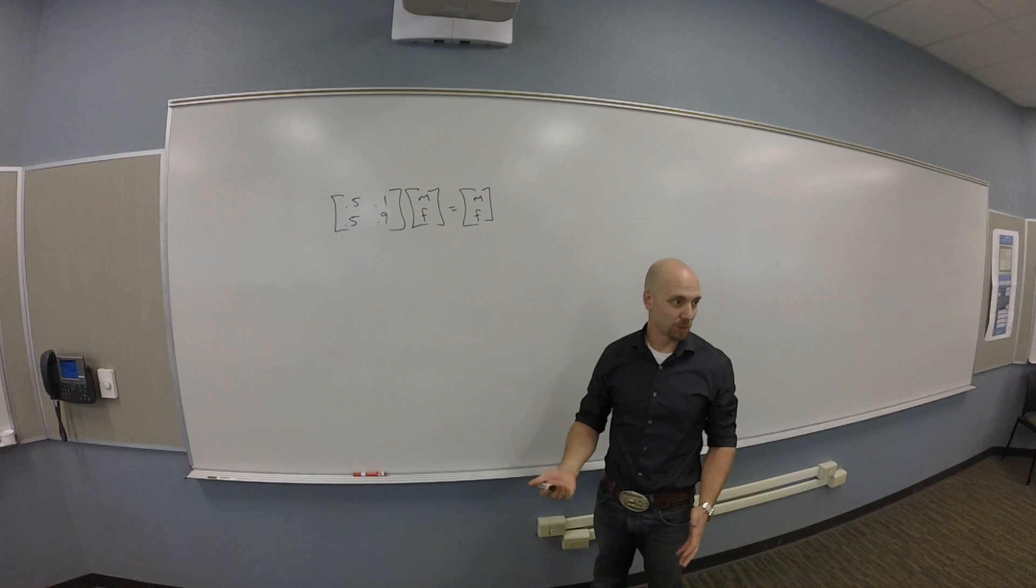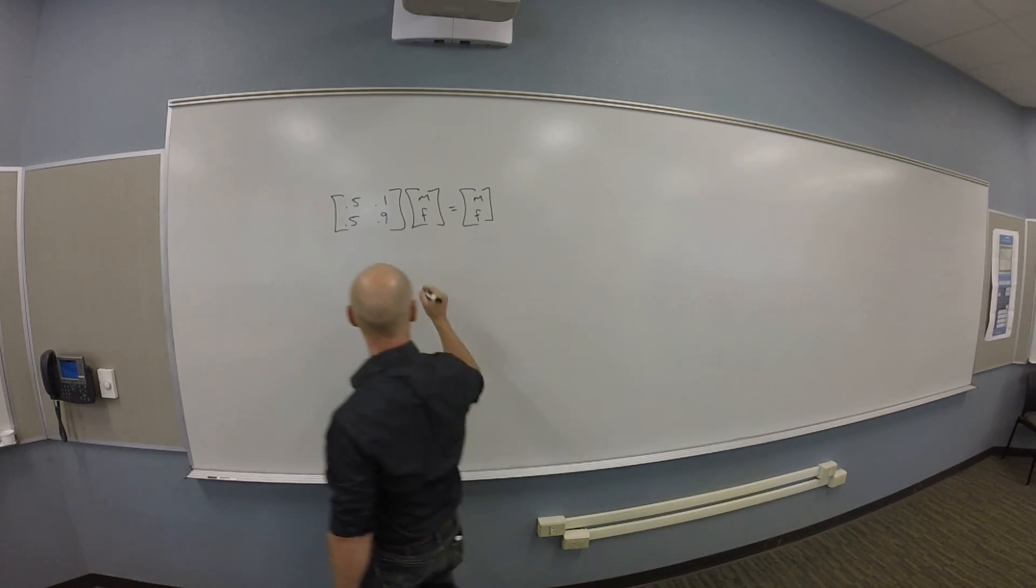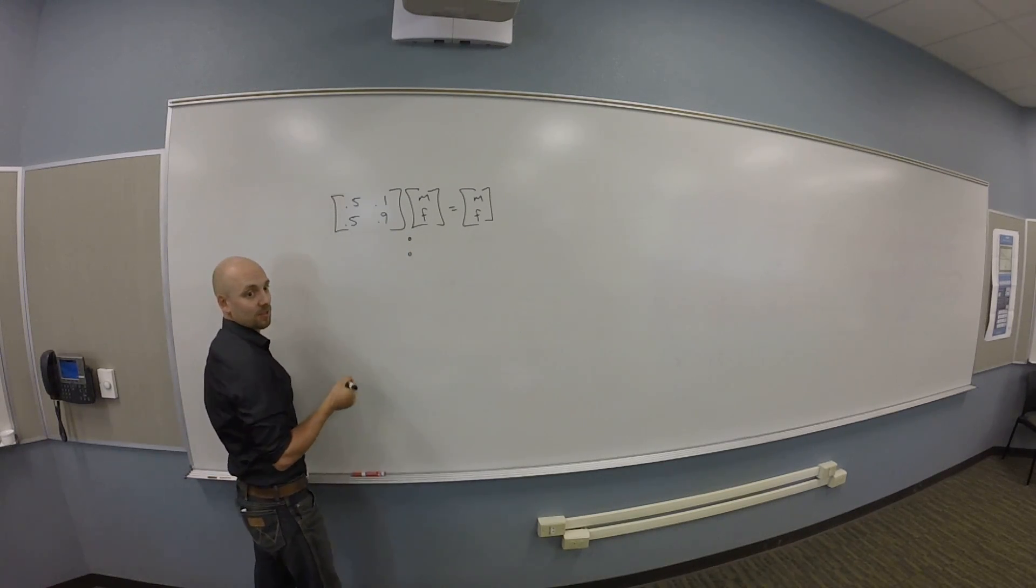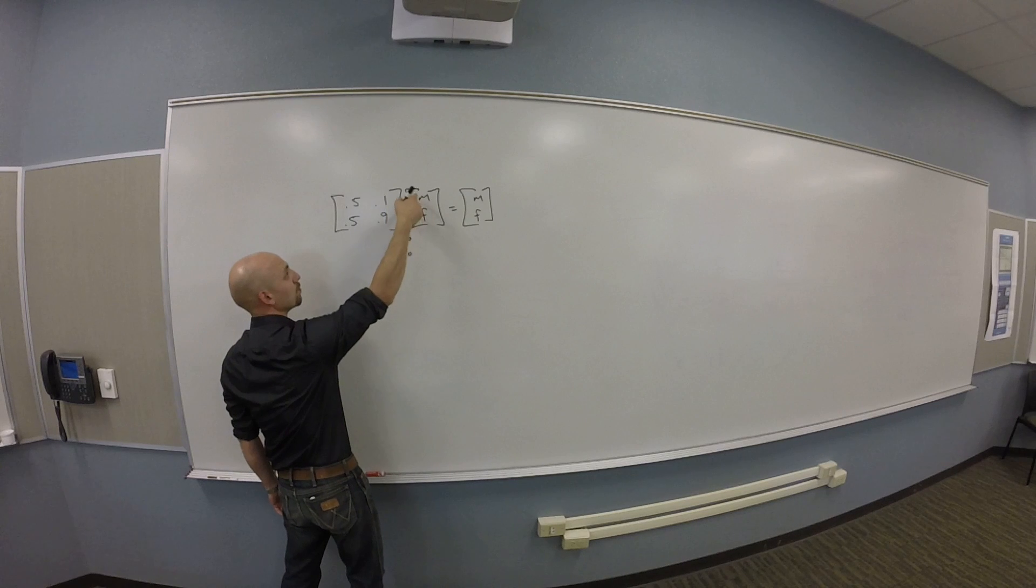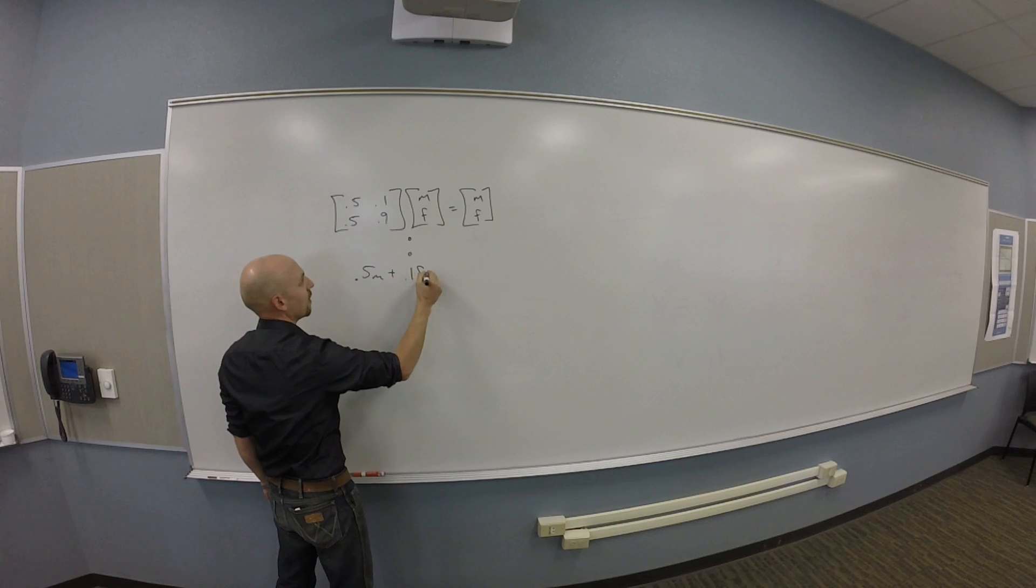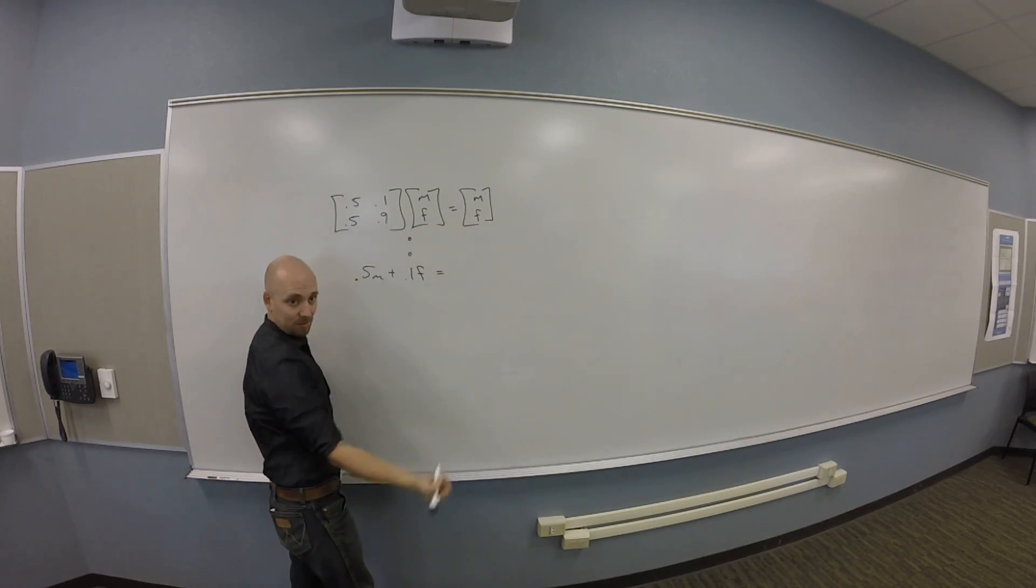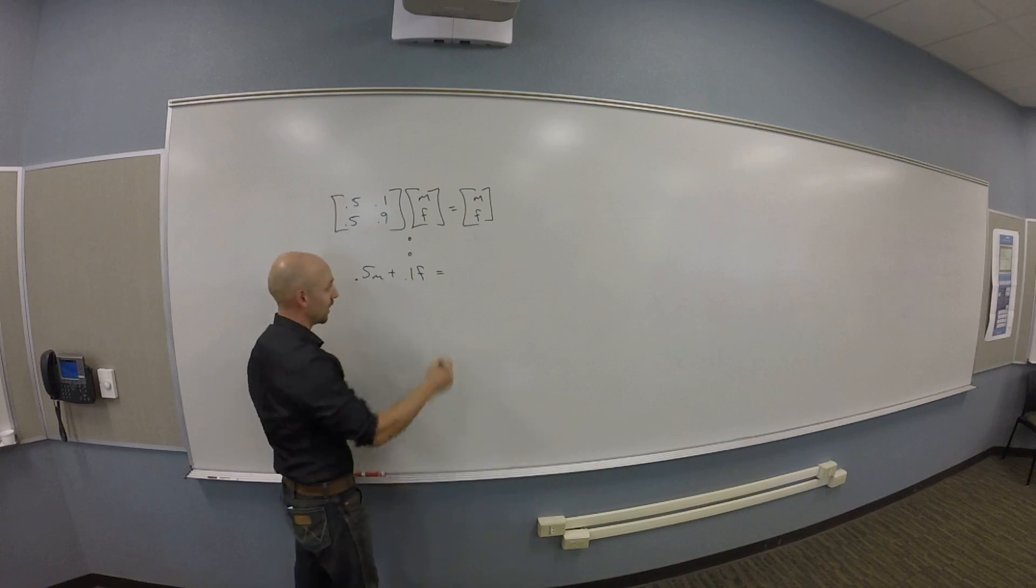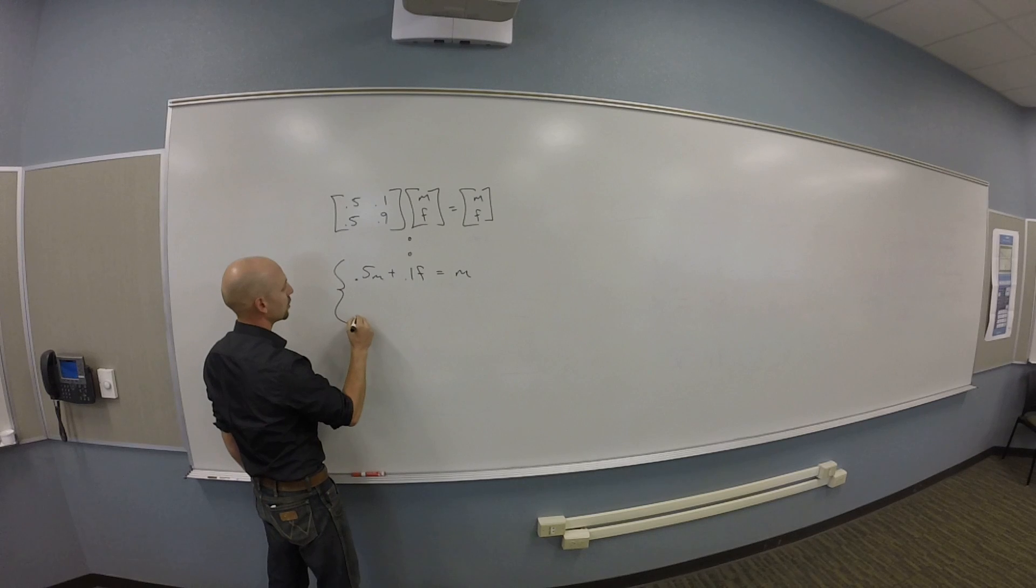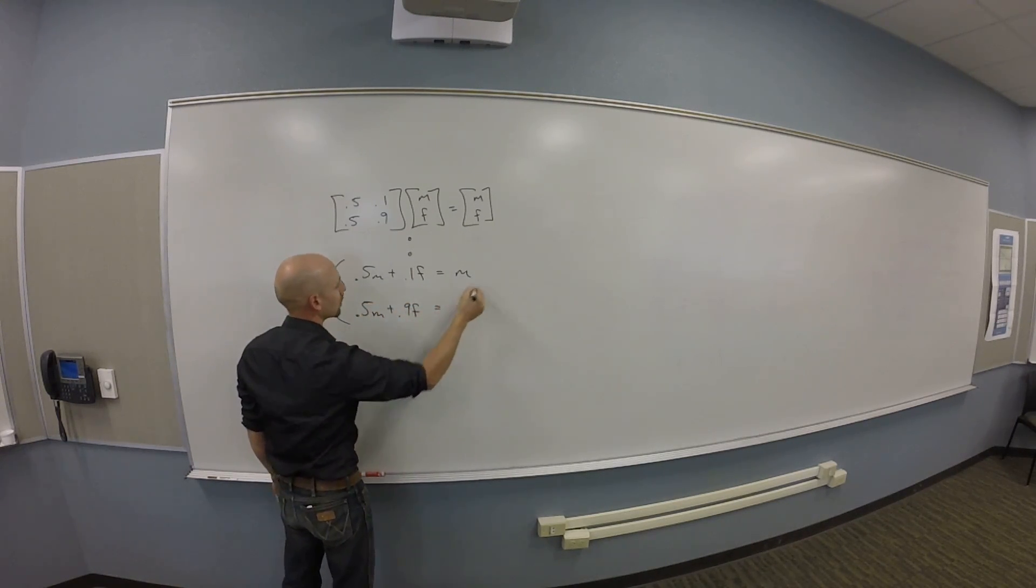Maybe the easy one is I could look at this and think about the equations that I have. So if I think about the equations, let's pick this up, drop it on. So I've got 0.5m plus 0.1f is what? M, okay, perfect. And the other equation is 0.5m plus 0.9f equals f.